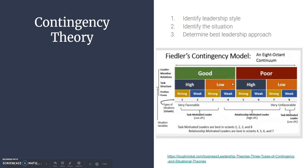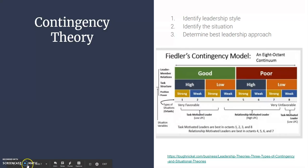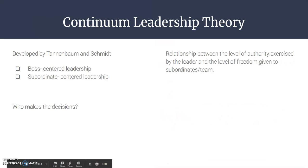I really enjoyed Fiedler's contingency model. This diagram summarizes things nicely: identify the leadership style, identify the situation, and then determine the best leadership approach. Task-motivated leaders perform best when they have the most control, while relationship-motivated leaders perform best when they have moderate control. It's important to be familiar with both types and how the situation can affect your behavior.